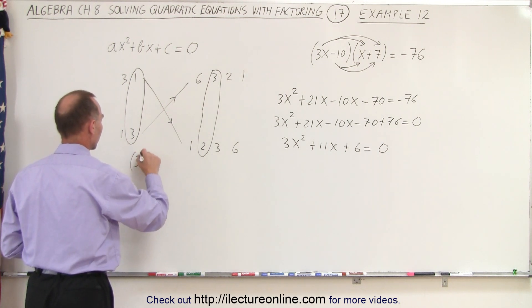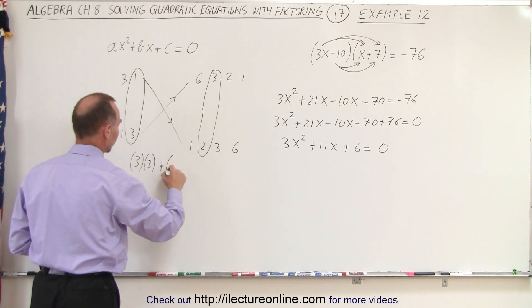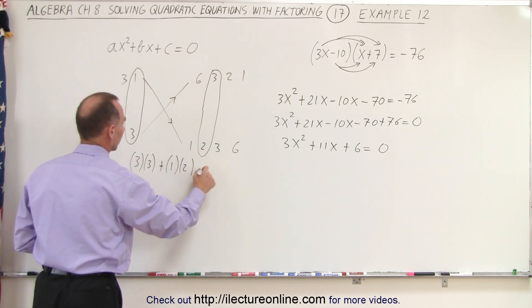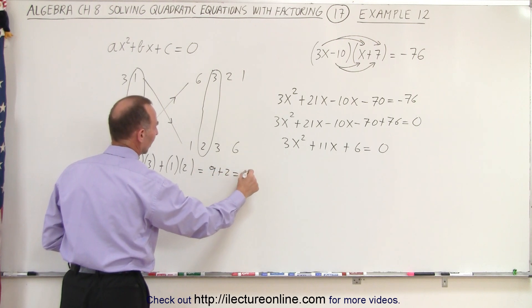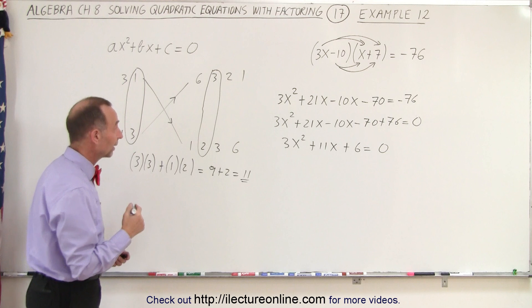3 times 3 plus 1 times 2. This is equal to 9 plus 2, which is 11, and sure enough, that does give me the middle term. So I have the right combination.